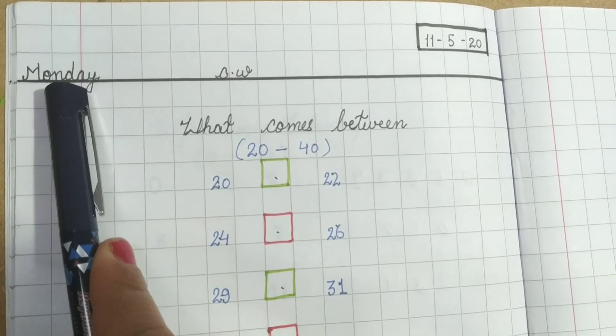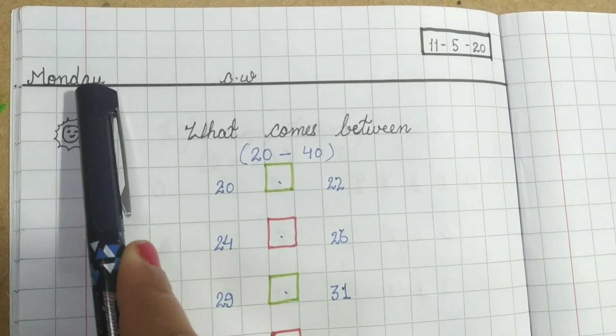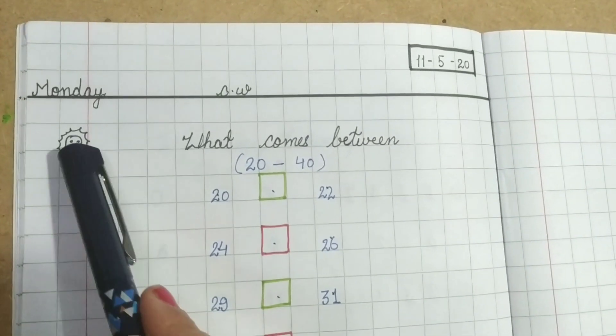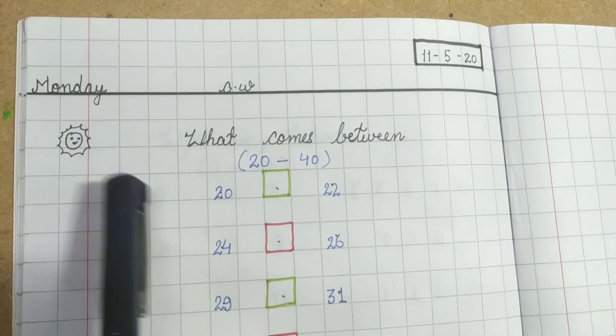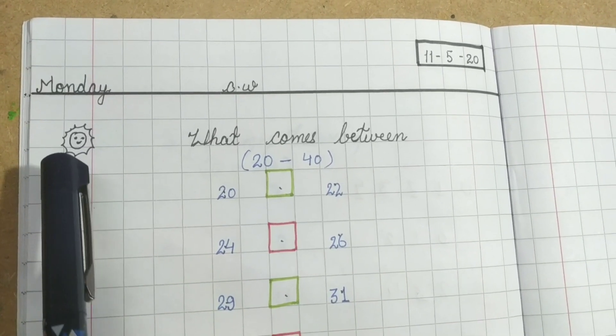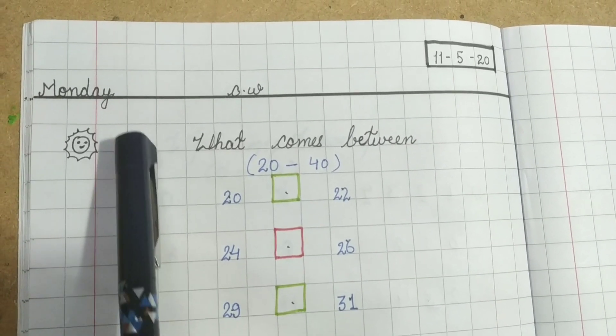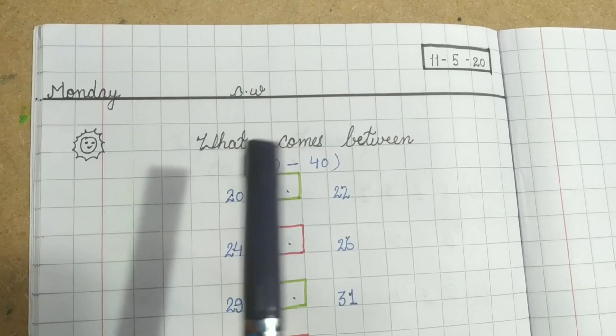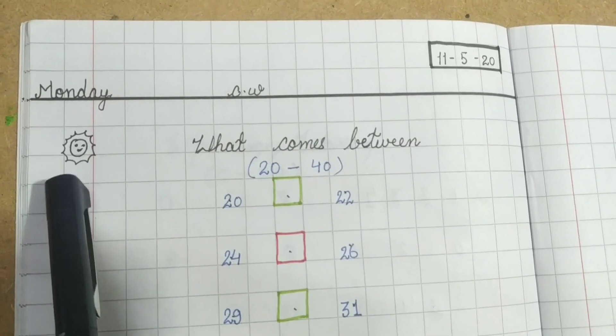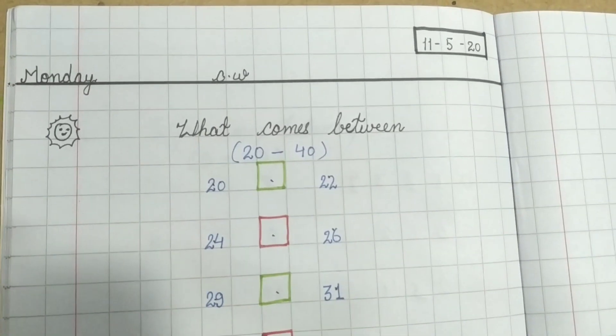I have also made the sun because it shows the weather outside. How is the weather today? Today is sunny, so the sun depicts the weather. You can also color it orange or yellow, it's up to you.